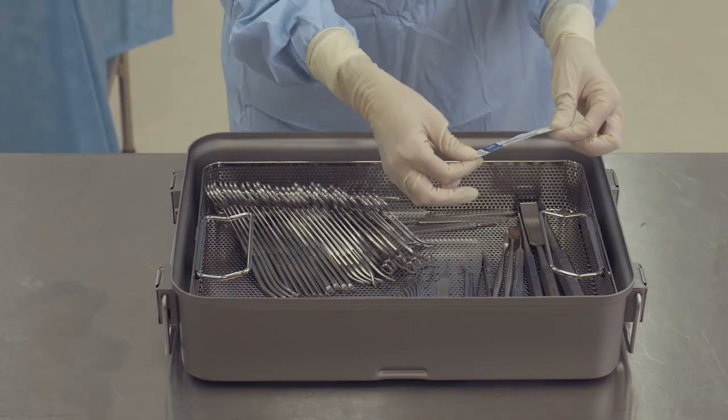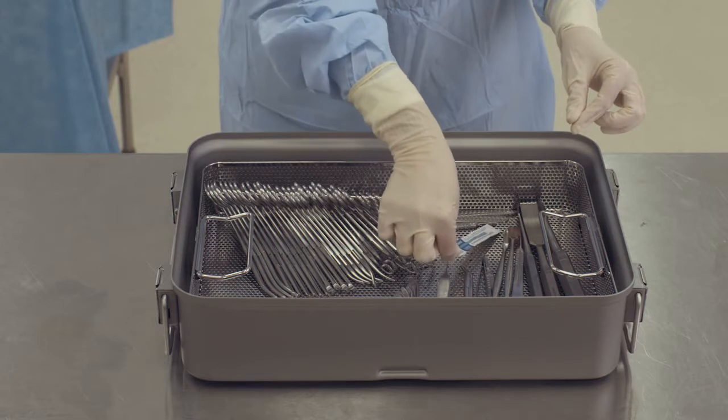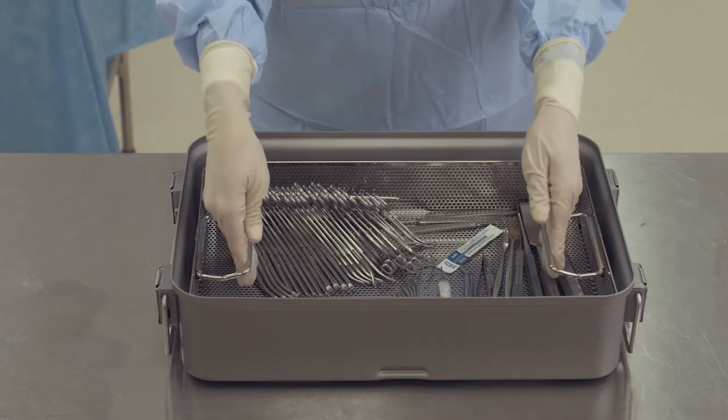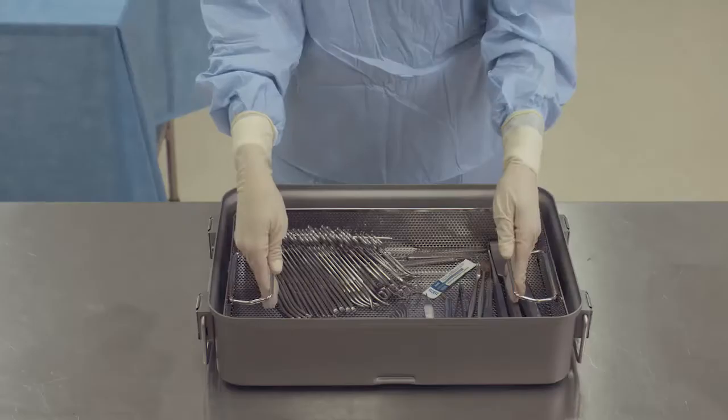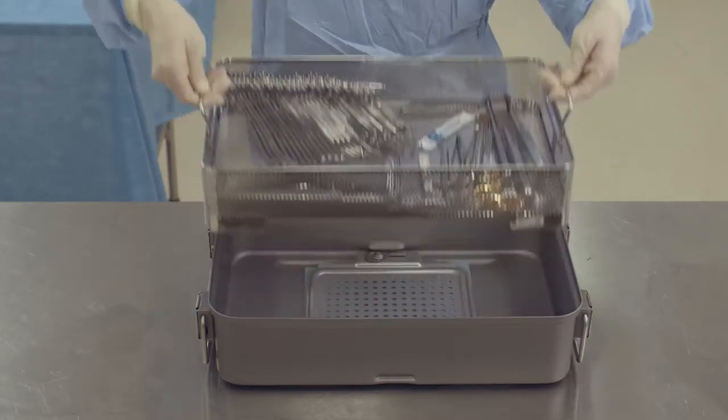Check the internal chemical indicator for acceptable results. Securely grasp the basket handles, making sure the sterile gown and gloves do not touch the outside of the container, the container edge or table. Lift the basket in a straight upward direction.